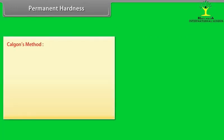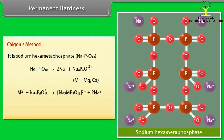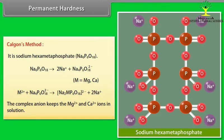Calgan's method: It is sodium hexametaphosphate. The complex anion keeps the Mg2+ and Ca2+ ions in solution.